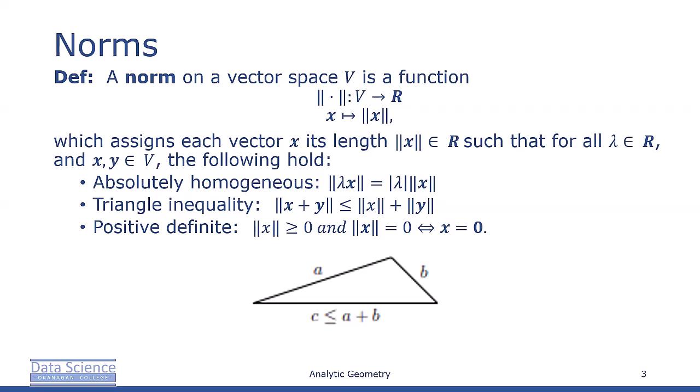The triangle inequality: the norm of x plus y is less than or equal to the norm of x plus the norm of y. And positive definiteness: the norm of x is greater than or equal to zero, and is equal to zero if and only if x equals zero. In geometric terms, the triangle inequality states that for any triangle, the sum of the lengths of any two sides must be greater than or equal to the length of the remaining side.